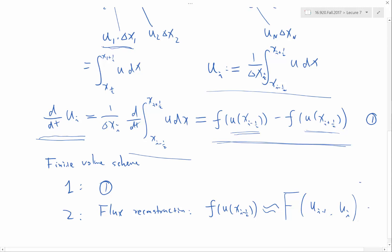Once I have these two ingredients—one is the integral form of the governing equation applied onto each small control volume, and two is I'm able to reconstruct the flux at the boundary of the control volume—then I have a finite volume scheme that I can program in the computer.